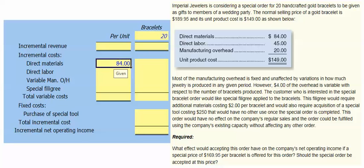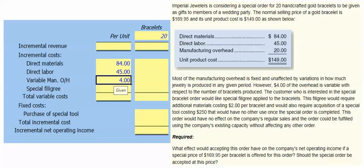Direct material costs are $84 per unit, direct labor is $45 per unit, and manufacturing overhead is $20 per unit. Most of the manufacturing overhead, however, is fixed and unaffected by variations in how much jewelry is produced in any given period. However, $4 of the overhead is variable with respect to the number of bracelets produced.